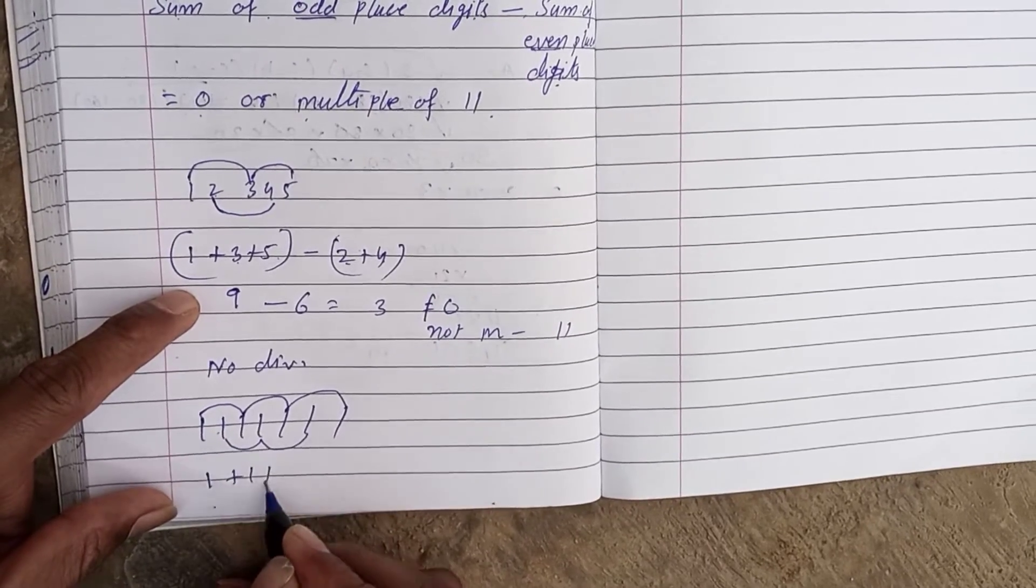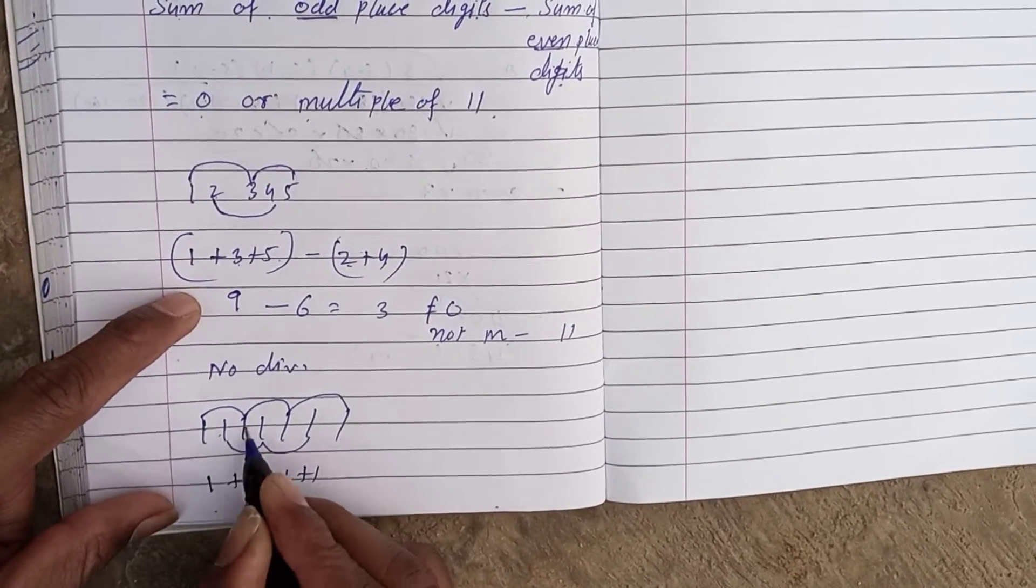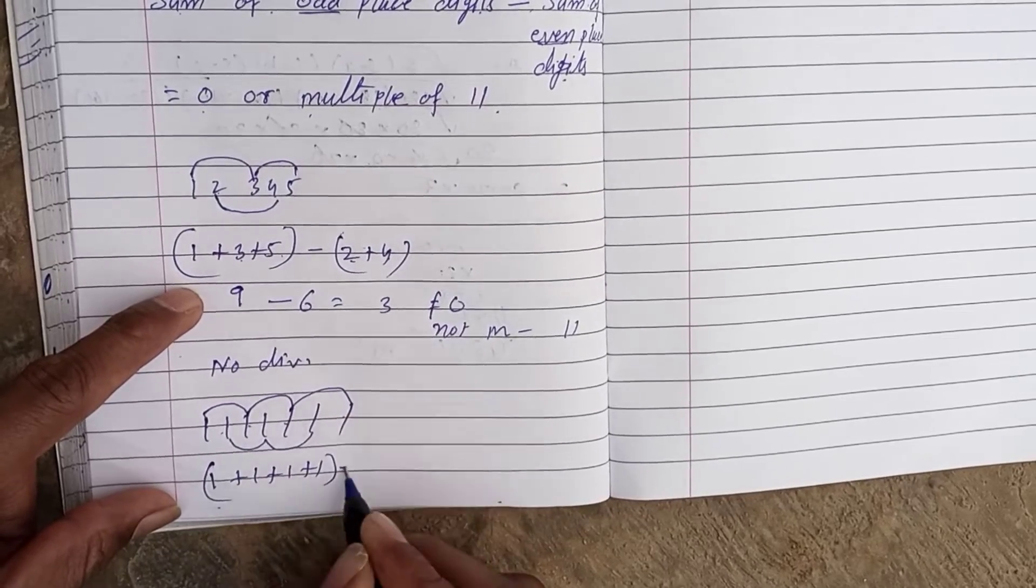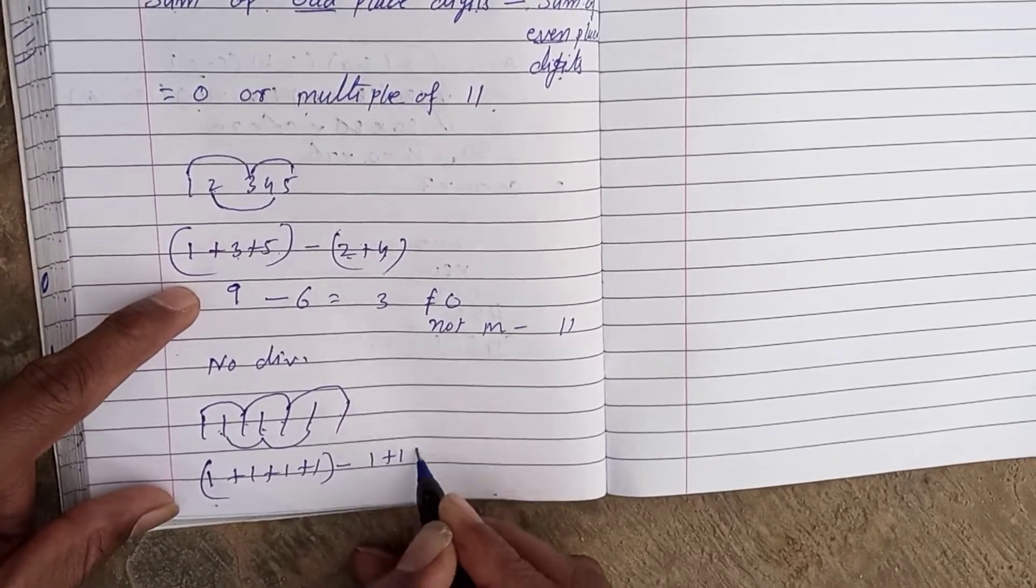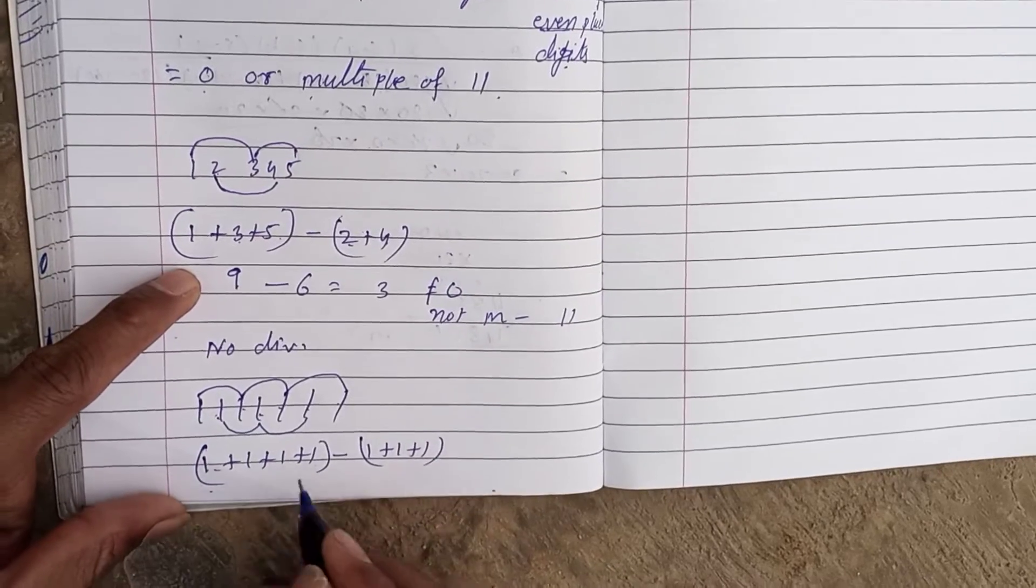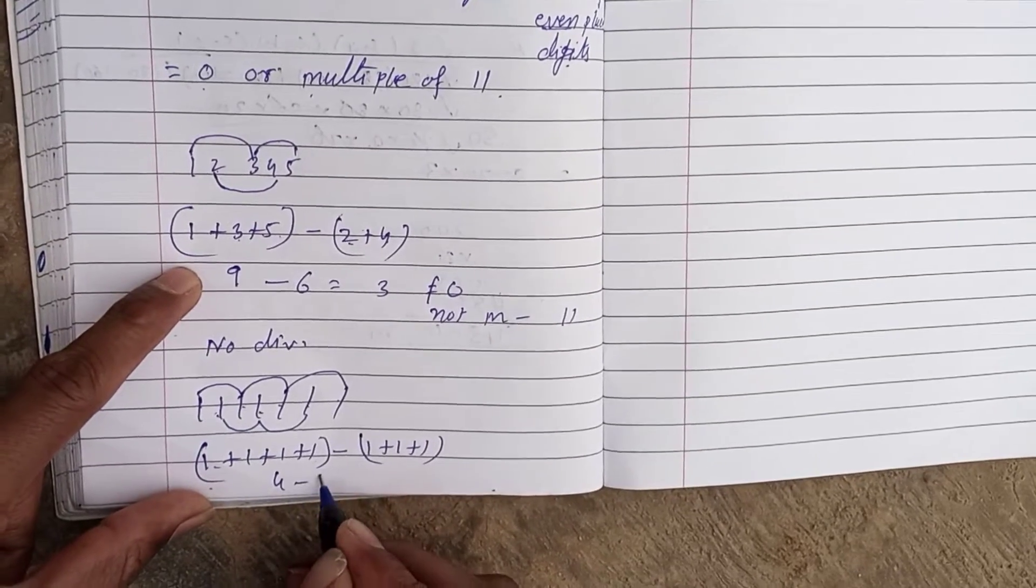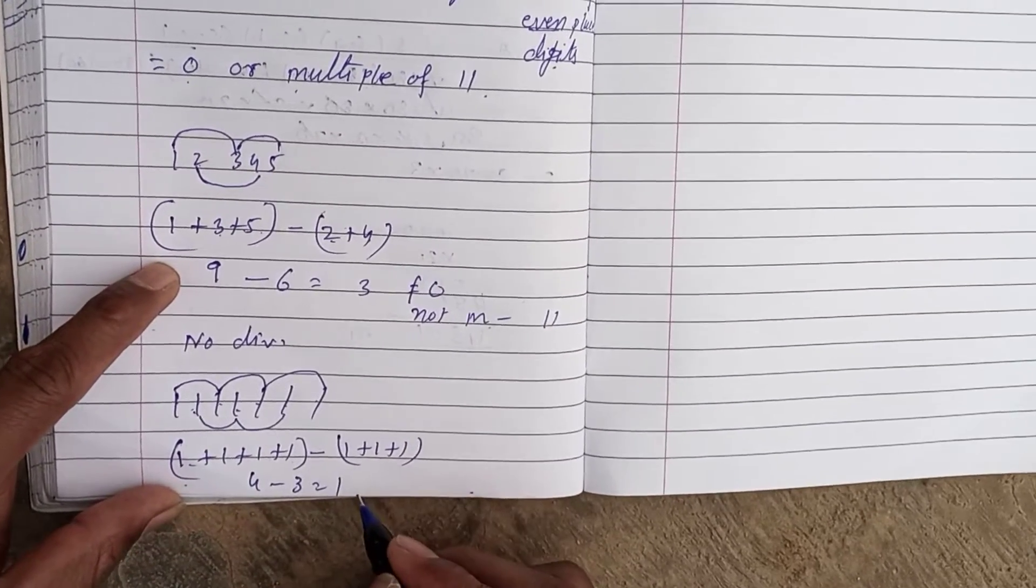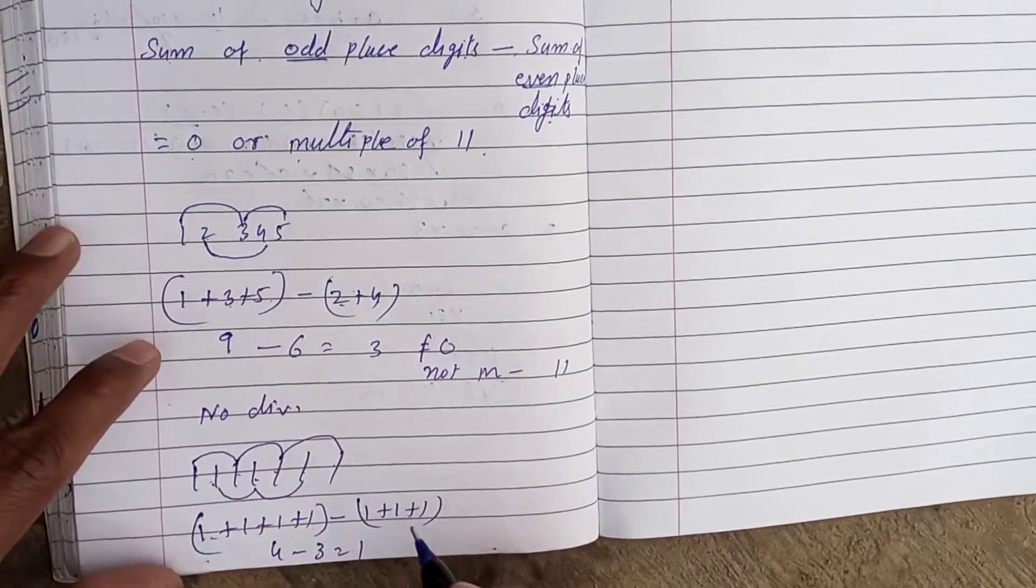So, 1 plus 1 plus 1 plus 1, then minus 1 plus 1 plus 1. This becomes 4 minus 3 equals 1. It is also not a multiple of 11, so it is not divisible by 11.